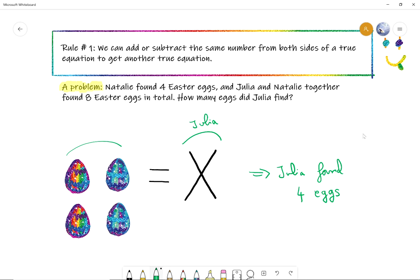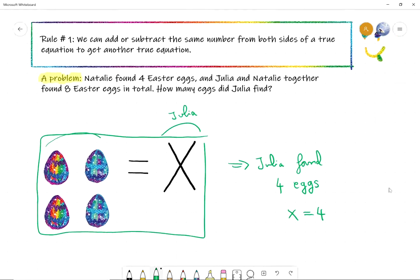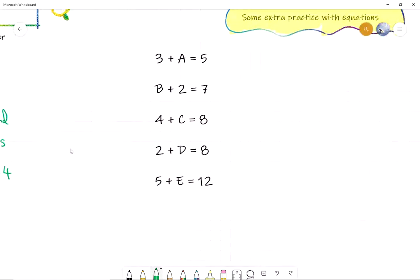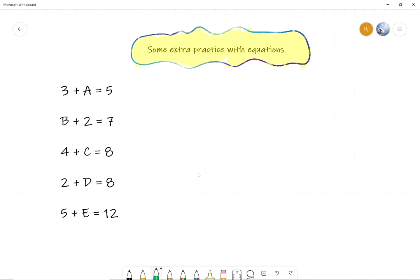So, Julia found four eggs and what we did was subtract eggs from both sides of the equation to find an equation that says X equals a number on the other side and that tells me how much X is. So, X was four in this equation. Okay. All right. So, Natalie, let's try this again with a bunch of other equations.